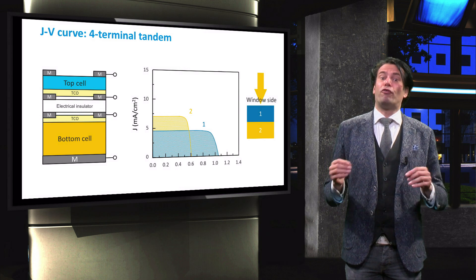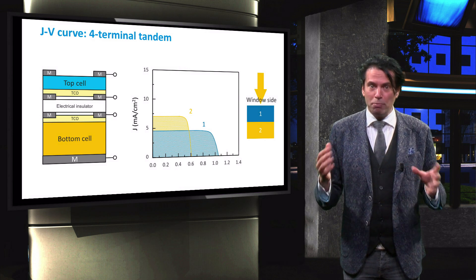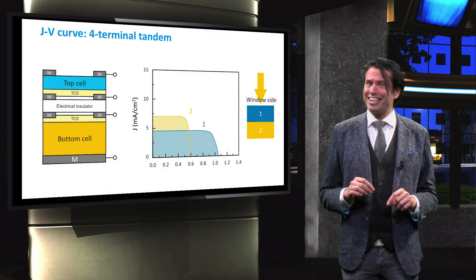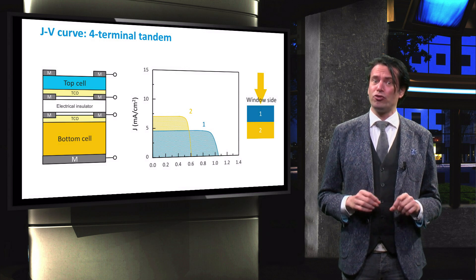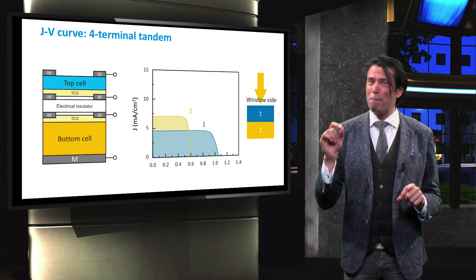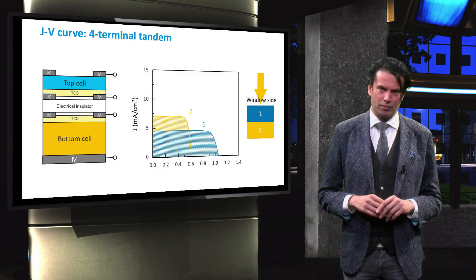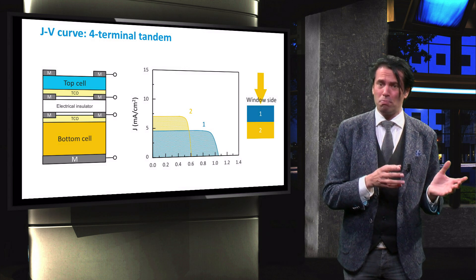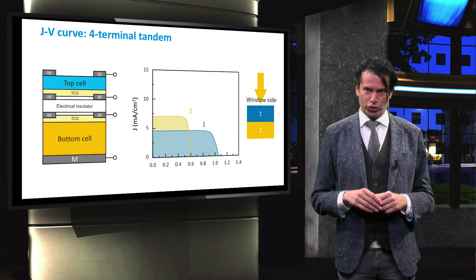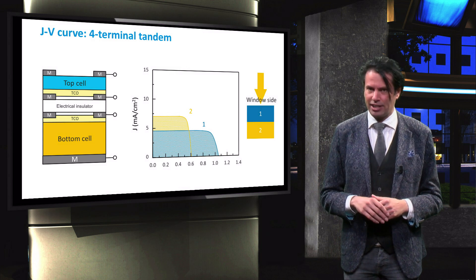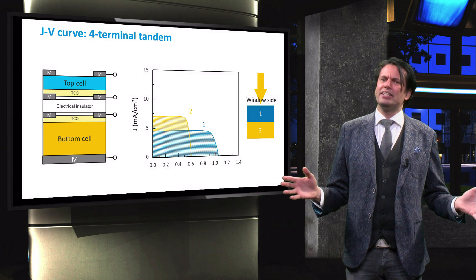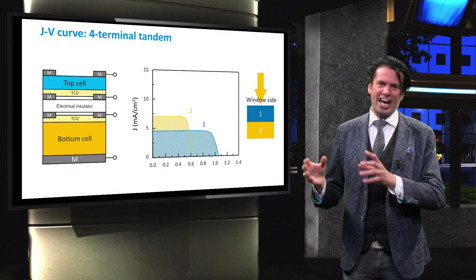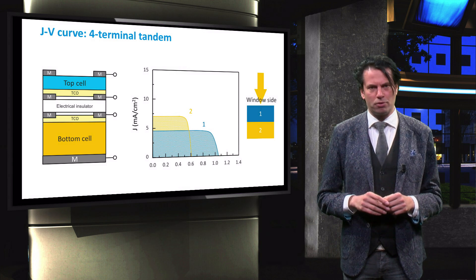As a result, a four terminal is better able to deal with variations in the solar spectrum, which can potentially lead to an increased efficiency yield over time of up to 15%. However, this comes at the cost of the need for an extra junction box and electrical conversion components for the two extra terminals. The question remains whether the increased energy yield can make up for the extra balance of system costs.